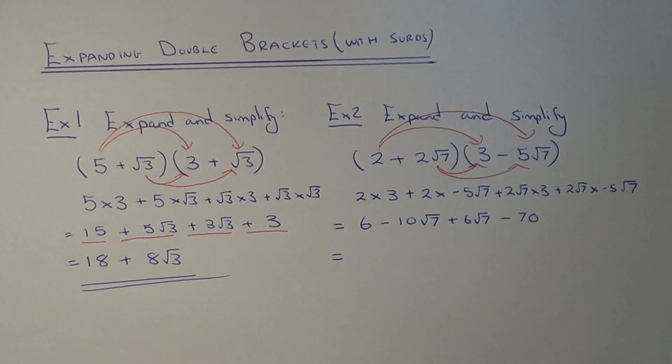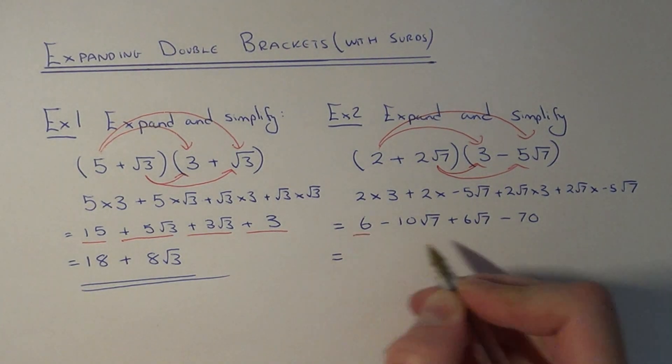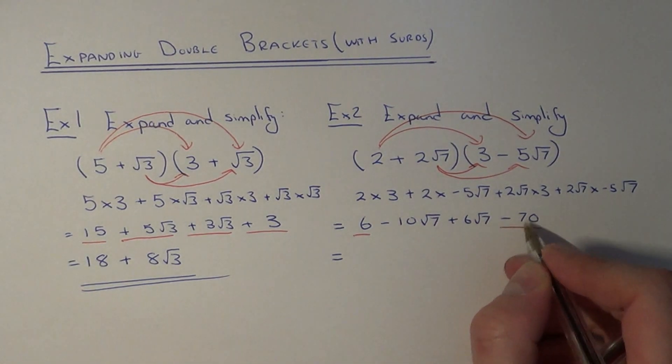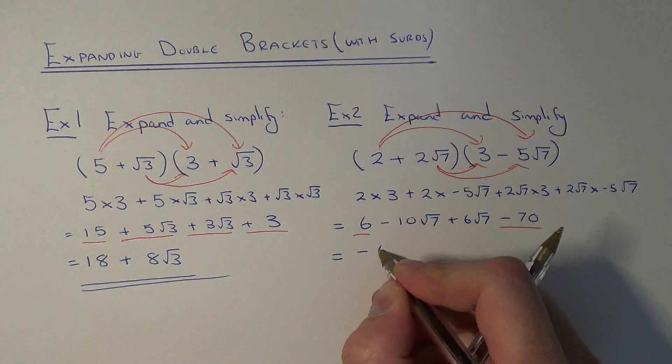So we just need to now simplify this again. If we combine the integers, 6 take away 70 would be minus 64.